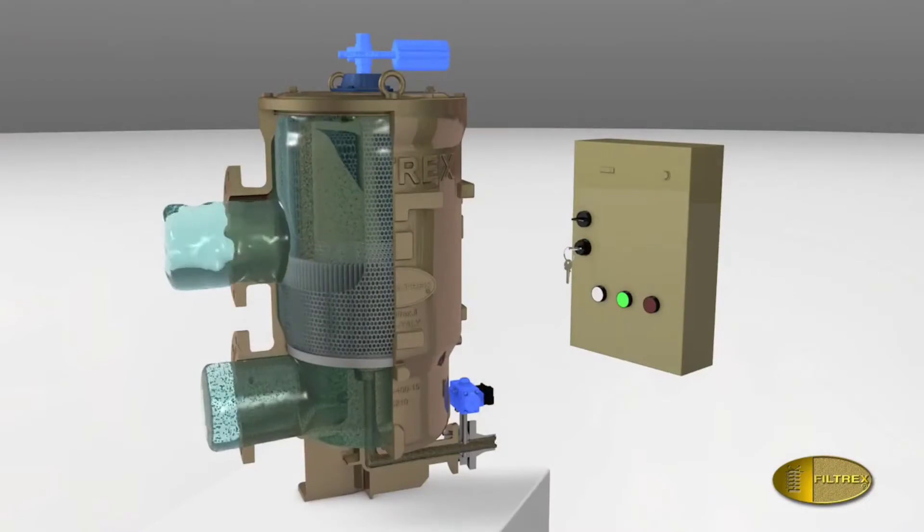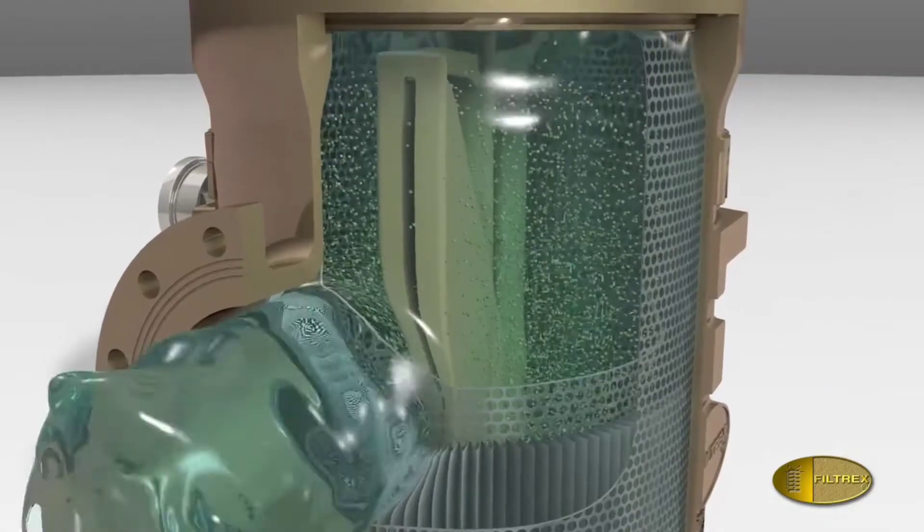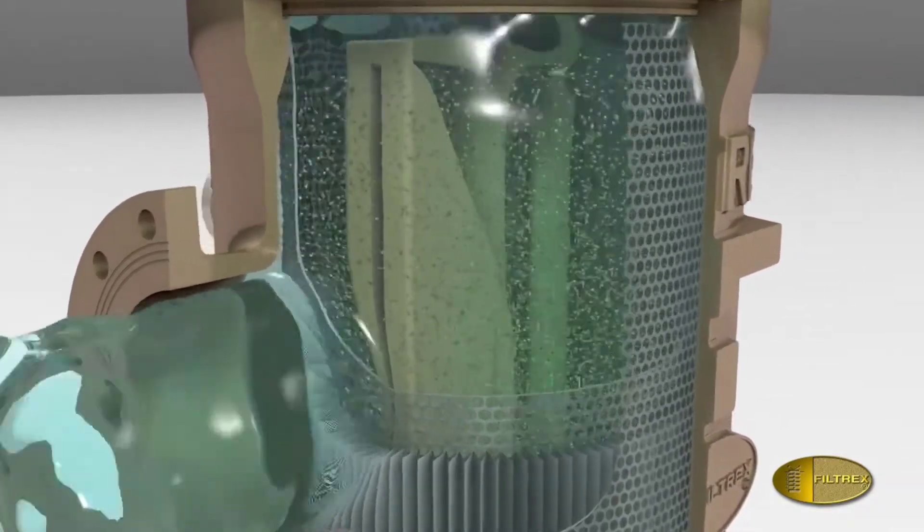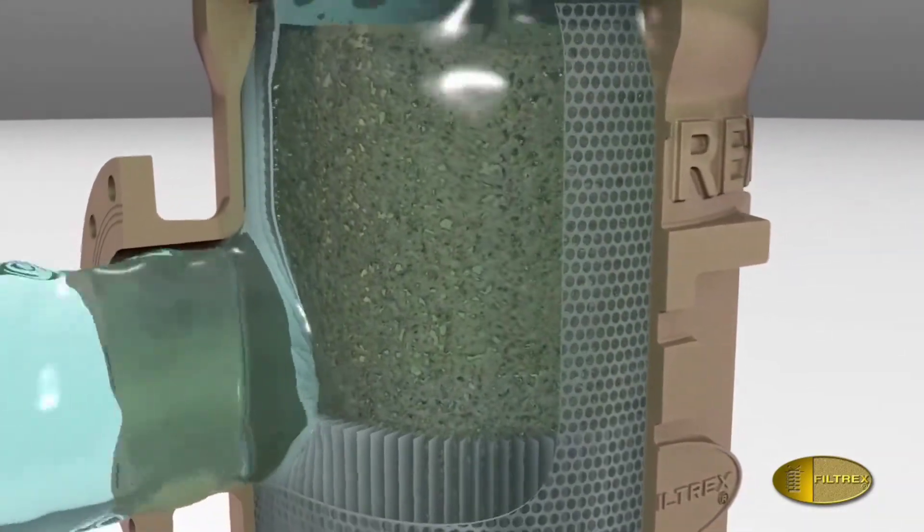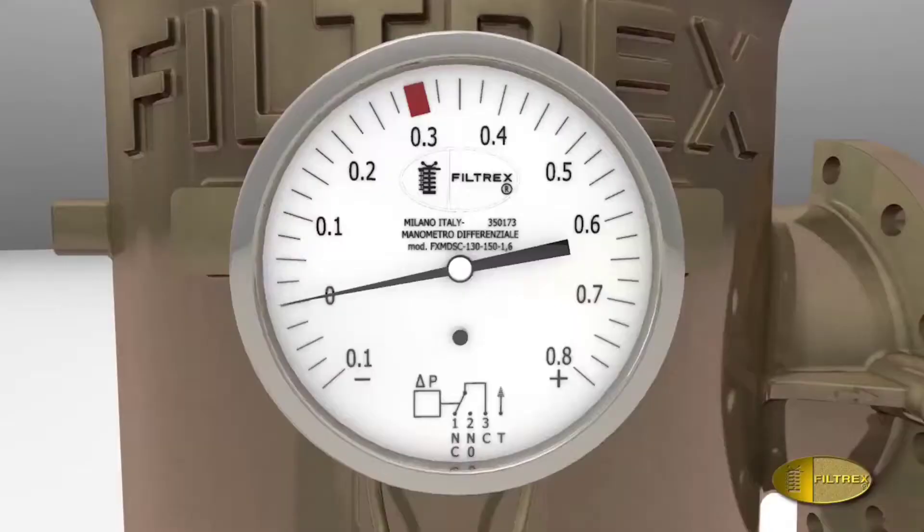At the end of the cleaning set time, the backwash valve closes and the motor stops, returning the filter to the static phase. The cleaning cycle is repeated every time the pressure drop reaches the preset value.